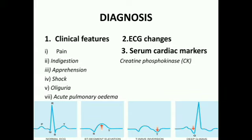Second is ECG changes — the electrocardiogram. In cases of angina pectoris versus myocardial infarction, we can differentiate: in MI there will be elevation of the ST segment, T-wave inversion, and deep Q-wave changes. These changes observed on the ECG report help distinguish MI from angina pectoris.